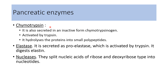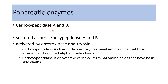Chymotrypsin is also secreted in the inactive form, chymotrypsinogen, and is activated by trypsin. It hydrolyzes proteins into small polypeptides. Elastase is secreted as proelastase, the inactive form, which is activated by trypsin, and it digests elastin. Nucleases split nucleic acids of ribose and deoxyribose type into nucleotides. Carboxypeptidase A and B are secreted as procarboxypeptidase A and B in inactive form, activated by enterokinase and trypsin. Carboxypeptidase A cleaves carboxy-terminal amino acids with aromatic or branched aliphatic side chains; carboxypeptidase B cleaves carboxy-terminal amino acids with basic side chains.